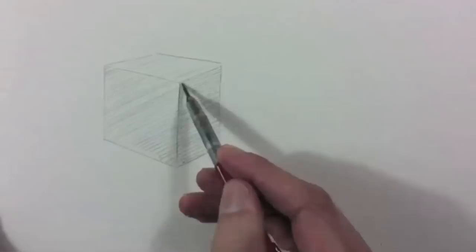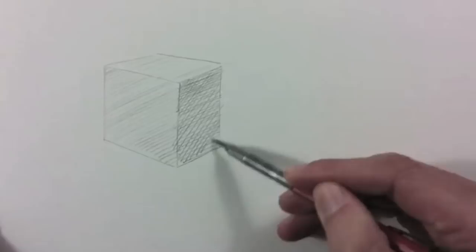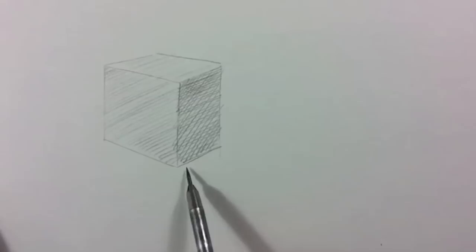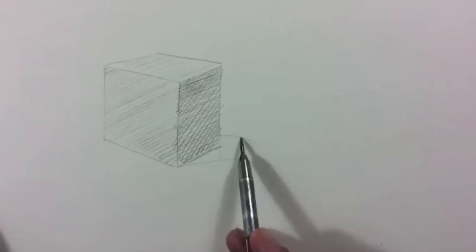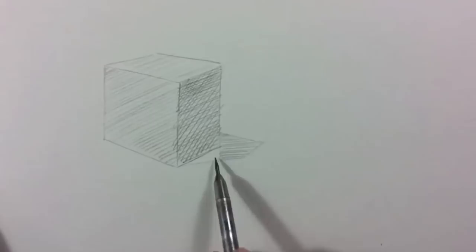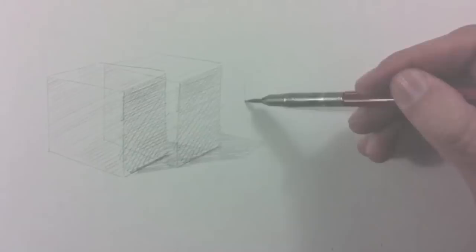If I want it darker I can go over it again or do a cross hatching. And the projected shadow or cast shadow would be something like this, if the light came from the upper left. And I can do what is called an accent. That's where the figure touches something else.